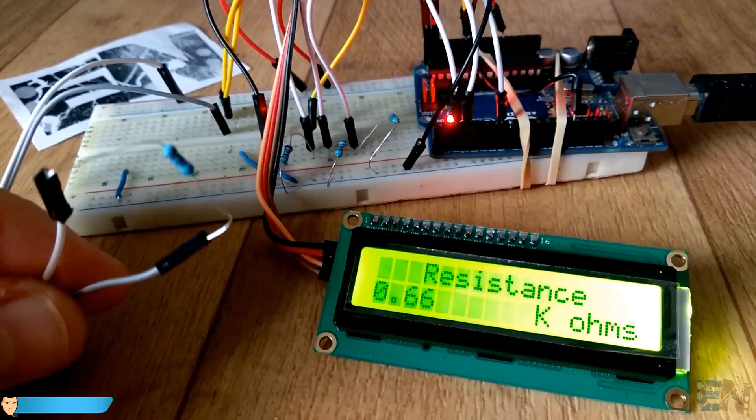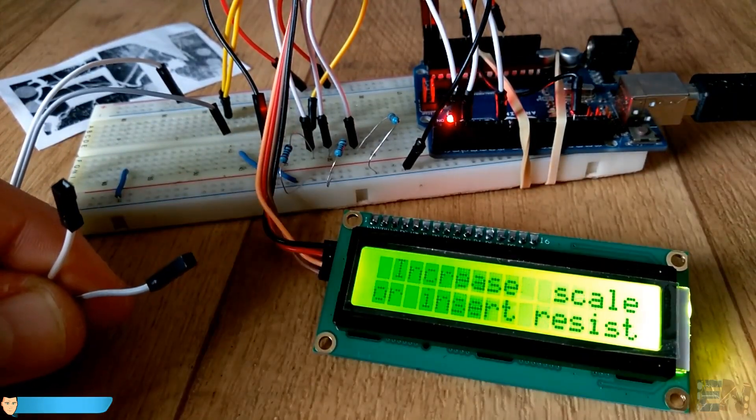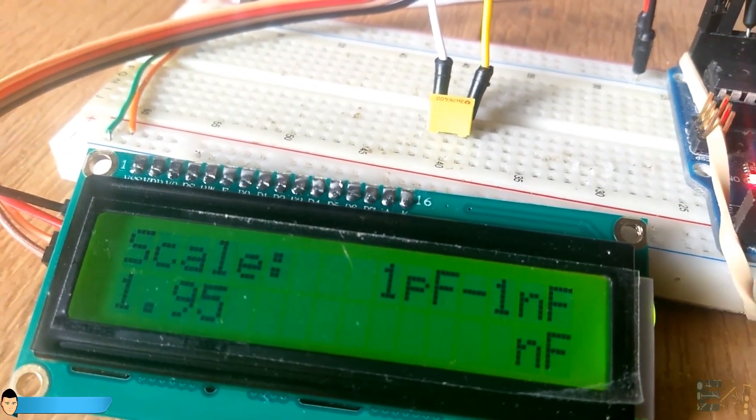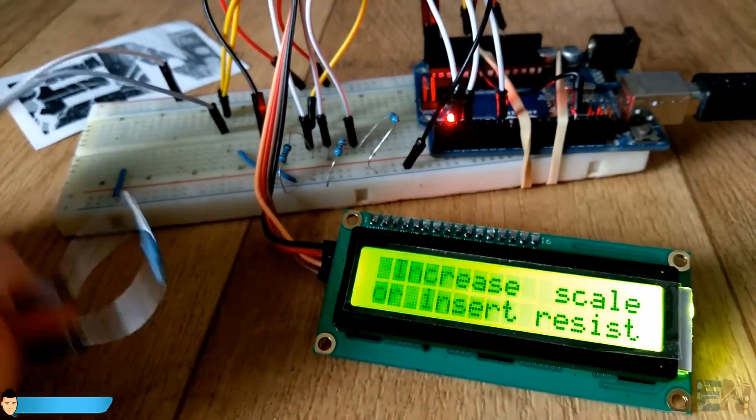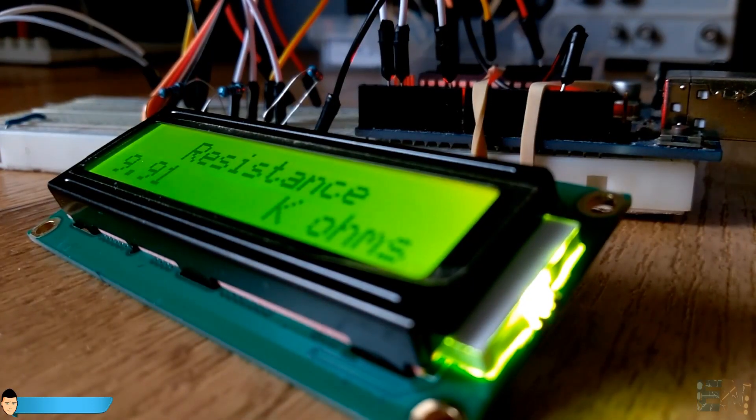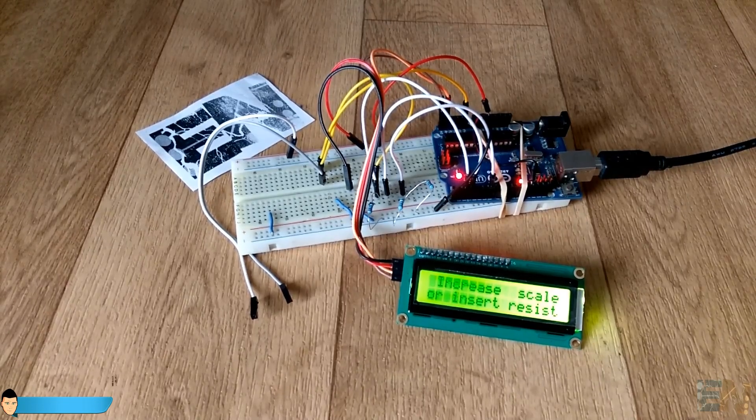First, we will see the resistance meter schematic. This is a very easy circuit based on a voltage divider. After that, we will see how to measure capacitance. Once we are done with that, we will mount the current and power meter using an external shunt resistor. Finally, we will build the inductance meter based on a resonant circuit.